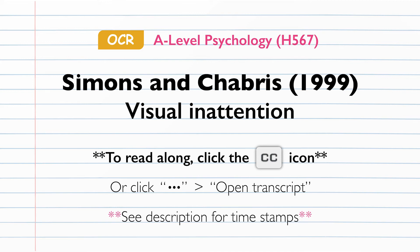Each session lasted between 5 and 10 minutes. After the study, several participants' data had to be discarded — for example, some reported during the question stage that they had heard of inattentional blindness, while others said that they had lost count of the number of passes. A total of 54% of all participants noticed the unexpected event, with 46% not noticing, demonstrating a significant level of inattentional blindness.